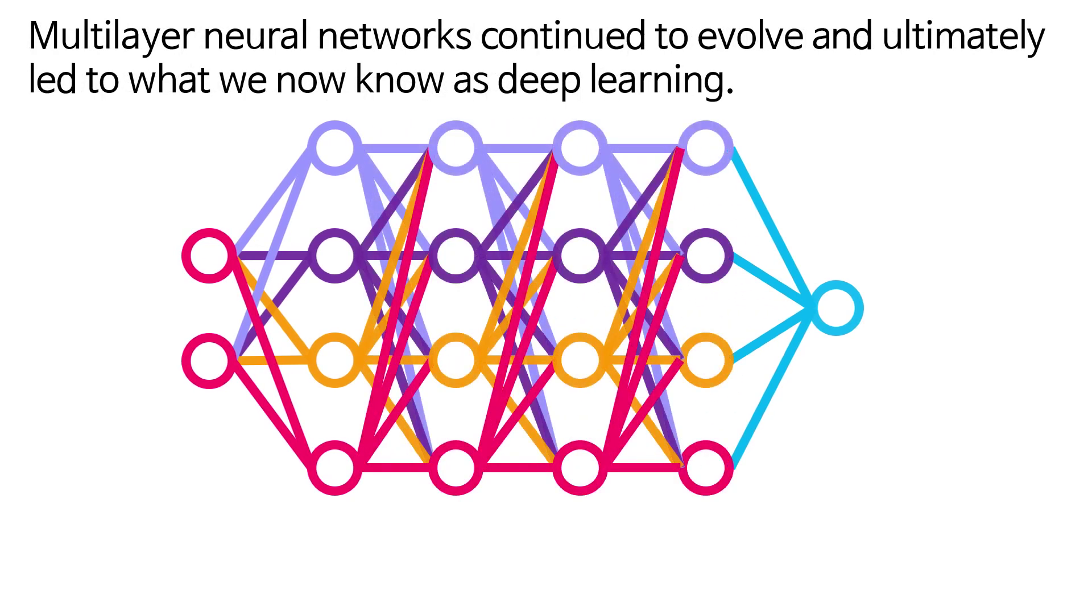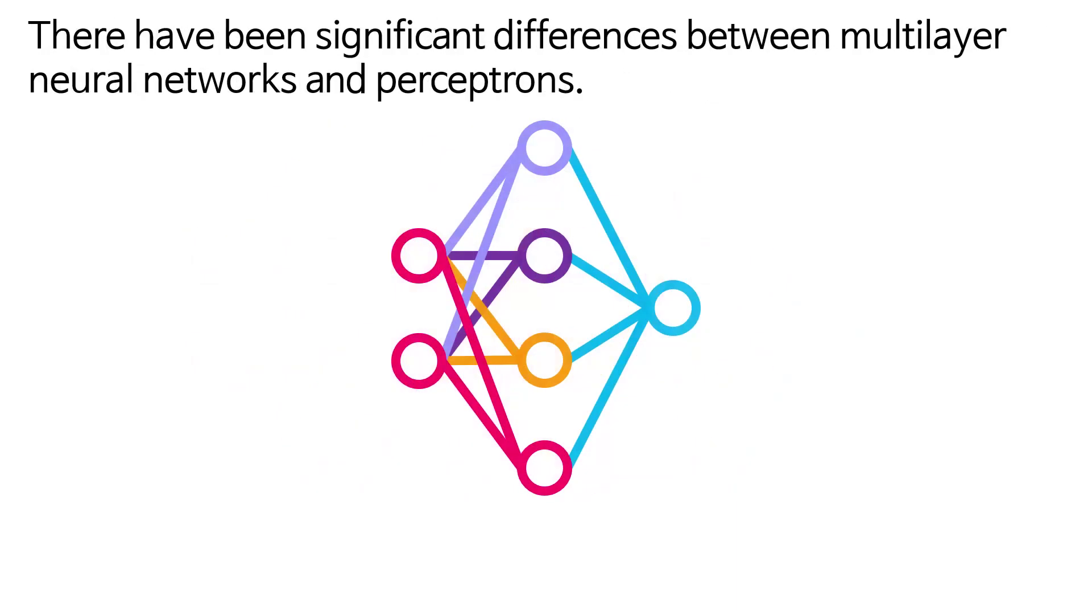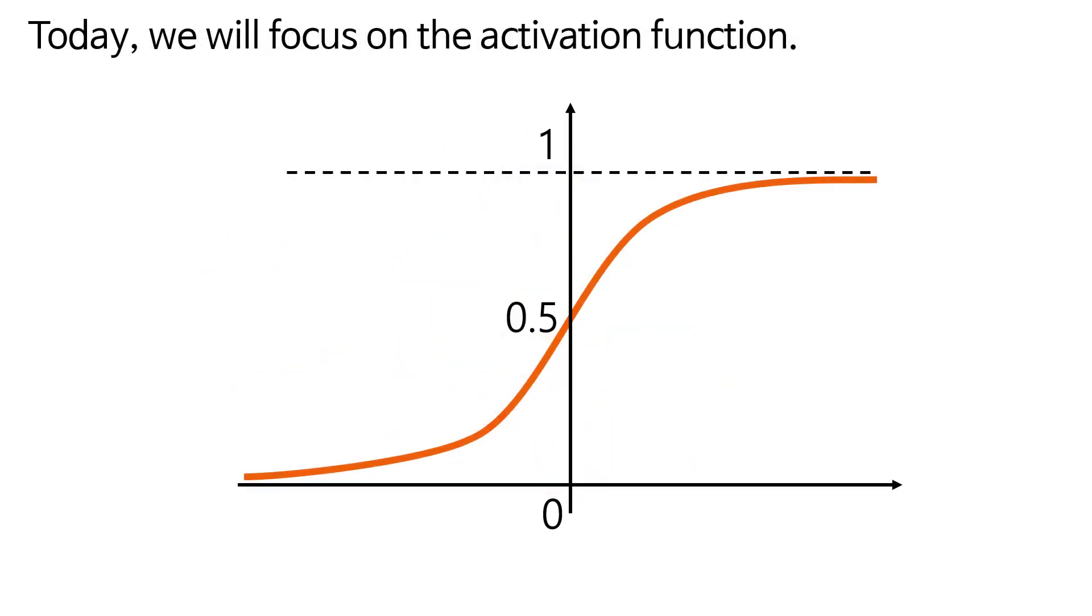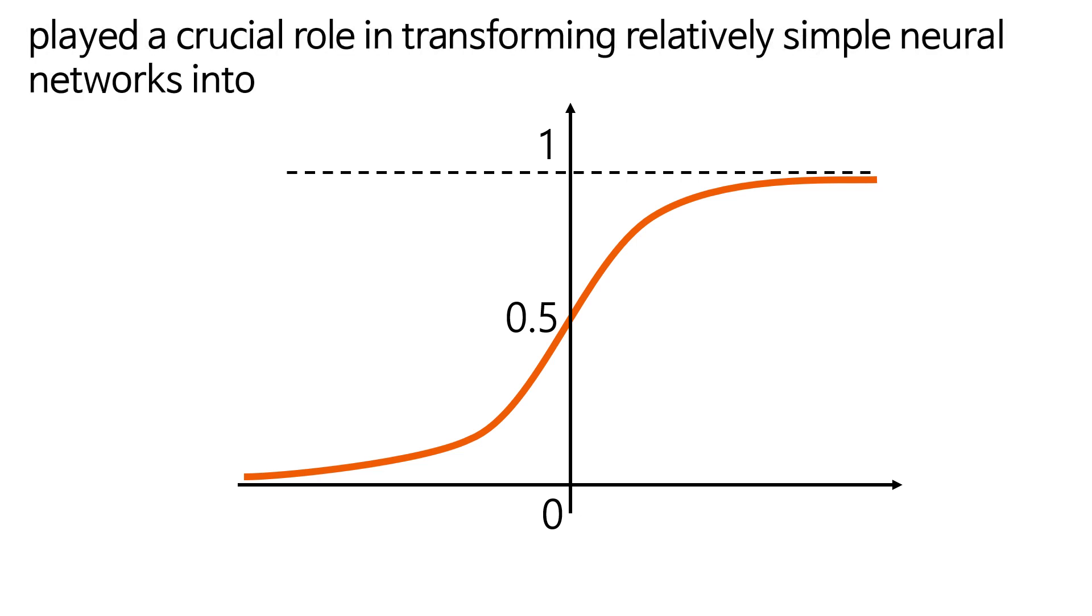Multilayer neural networks continue to evolve and ultimately led to what we now know as deep learning. There have been significant differences between multilayer neural networks and perceptrons. Today we will focus on the activation function.